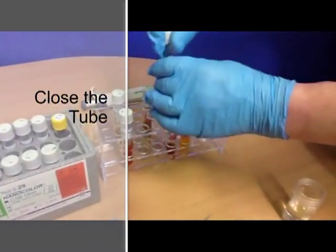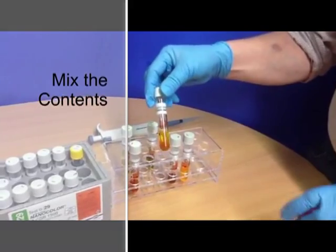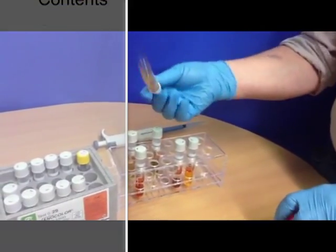Next, close the tube and mix the contents. The tube will get hot when the sample is added to the acid. The safest way to hold the tube is by the cap while mixing.